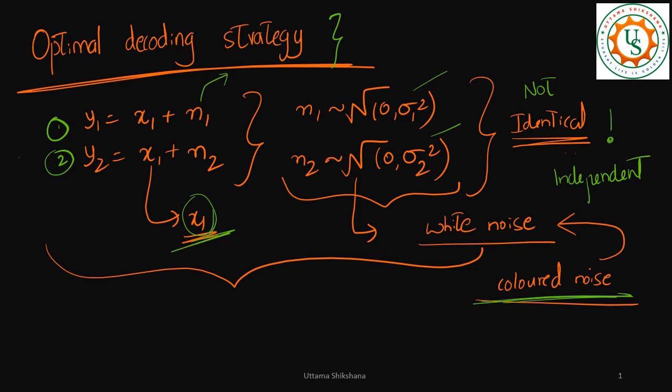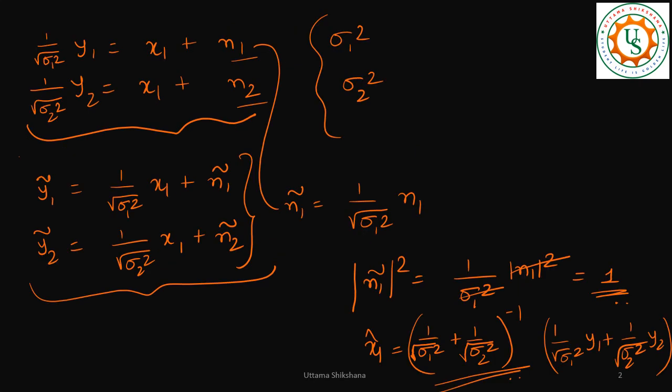So we have already seen the solution for the case when the noise is white. So why can't we convert these equations such a way that the noise is white? For that, one of the strategy is to multiply by 1 by square root of sigma 1 square, and the second equation 1 by square root of sigma 2 square. So in which case you will get back these two equations.